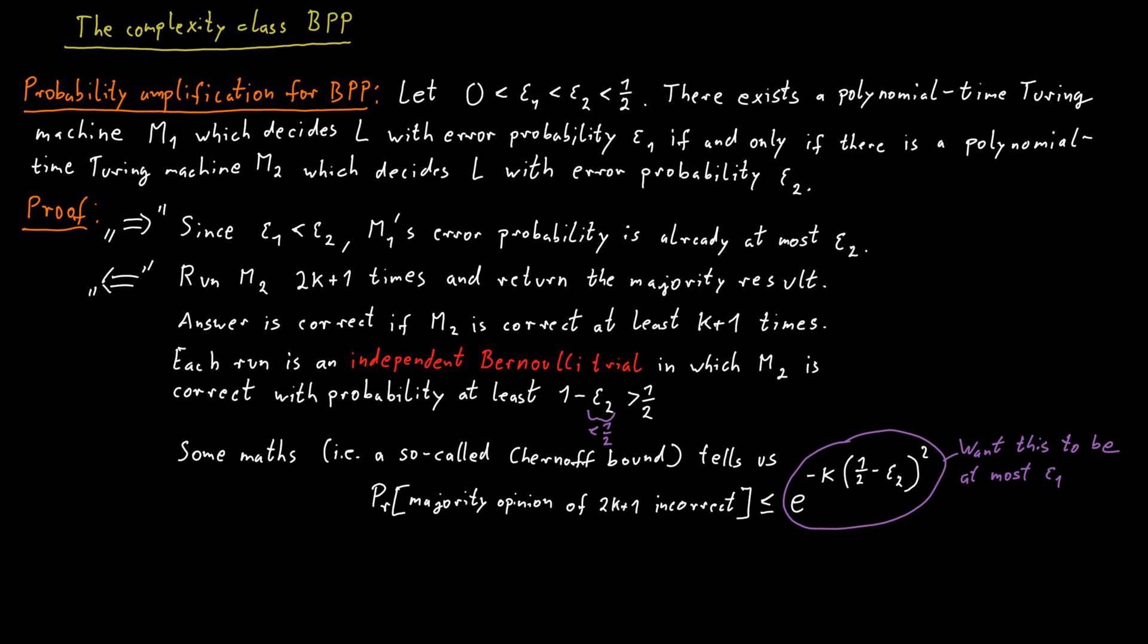So how big does k need to be for this quantity to be epsilon 1 or smaller? It's fairly easy to see that this is satisfied if k is bigger than the natural logarithm of 1 over epsilon 1 divided by (1/2 minus epsilon 2) squared. If we plug this in, the (1/2 minus epsilon 2) squared cancels out and we are left with e to the power of minus natural logarithm of 1 over epsilon 1.